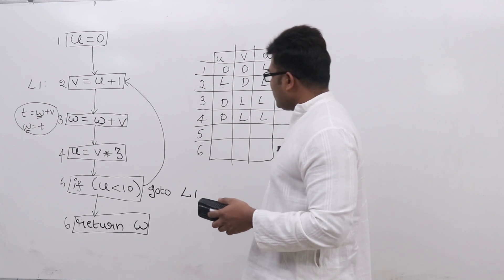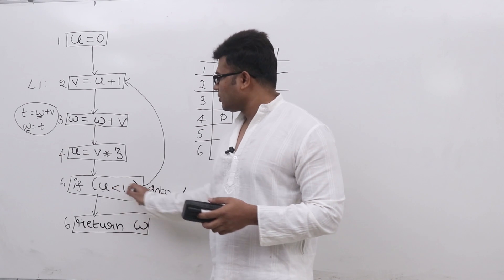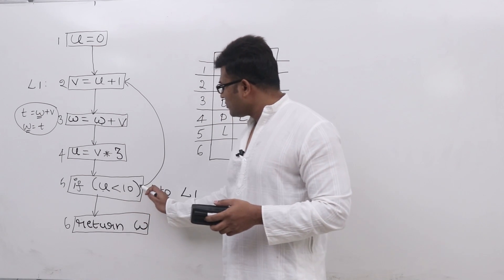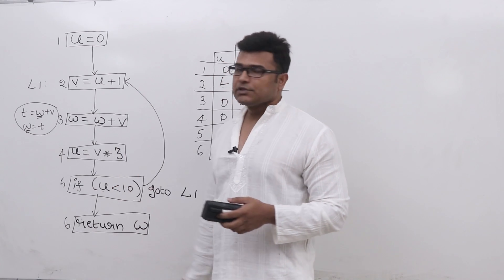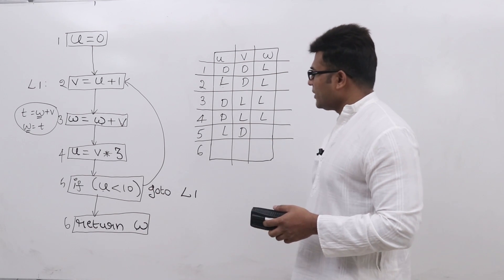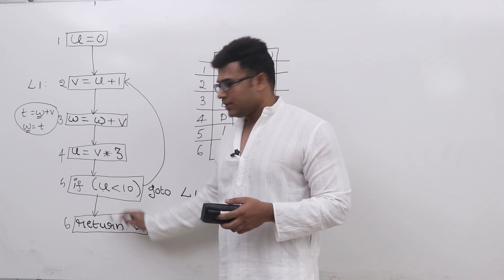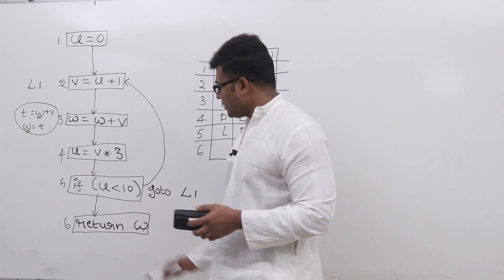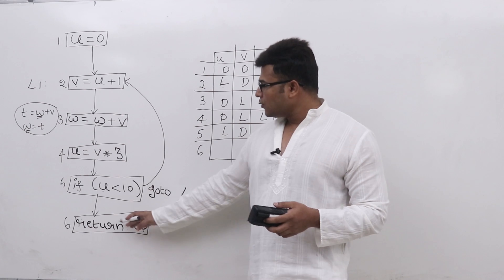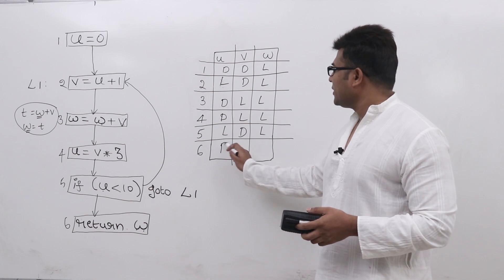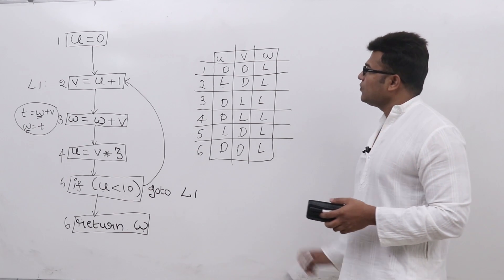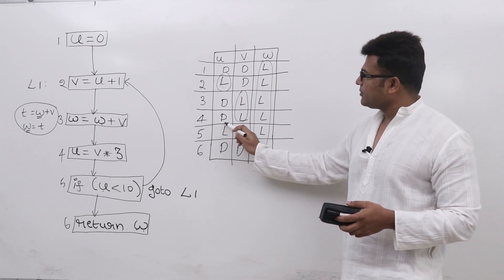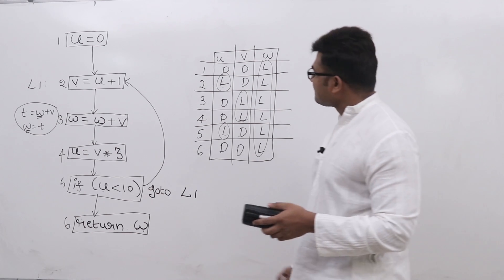For statement number five: U is used in order to compute the expression, so U is live. V is directly defined before its use on the path, therefore V is dead. W is clearly used and there is no definition for W on that path, so W is live. For statement number six: U and V are not used and there is no path going from six to any uses of U and V, so both are dead. W is live. So the lifetime of W spans all statements, V is live at only two statements, and U is live at two statements.